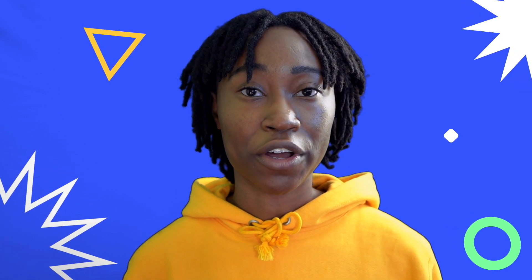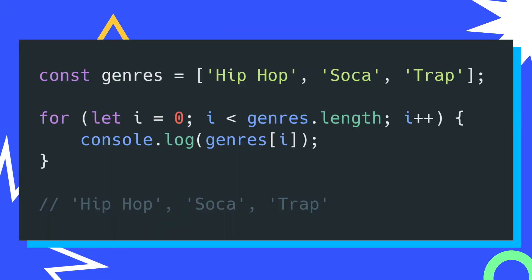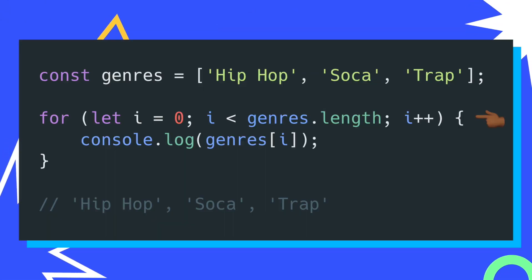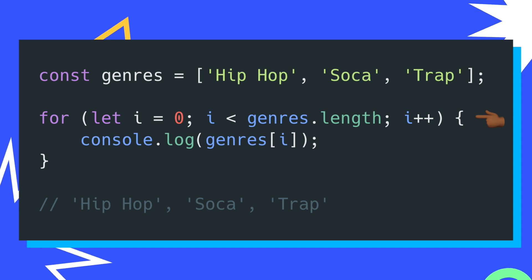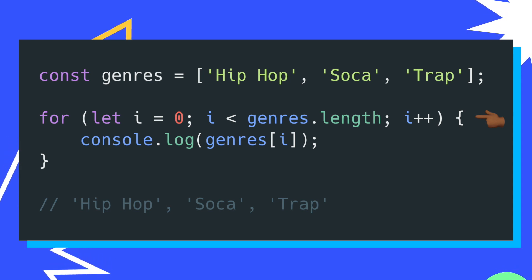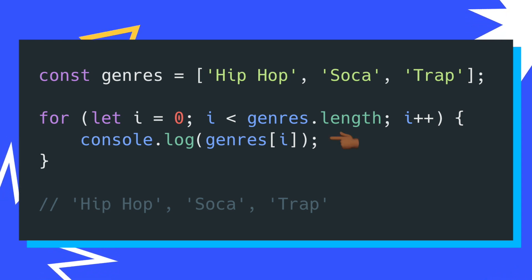This is a great example to show how the increment and decrement operators work, but you'll most likely see these operators used when you're trying to loop over something, more specifically when you're using a for loop or a while loop. Here you can see that I'm using the increment operator to tell my for loop that I want to increase the current index of my genres array, and then for each genre, I'll print it out.